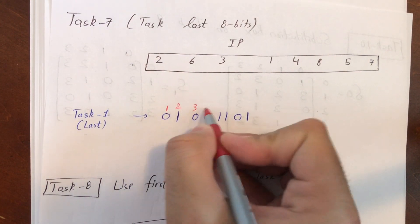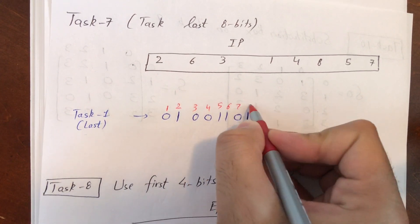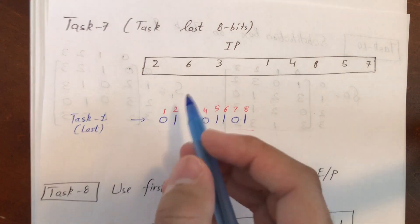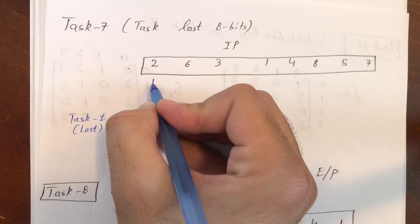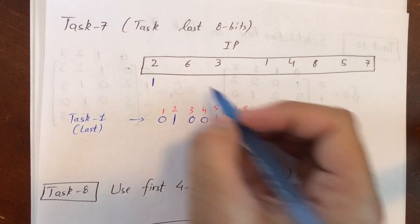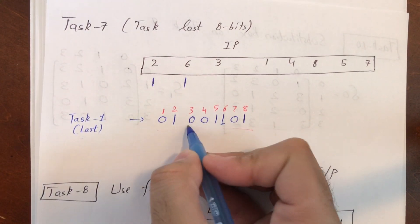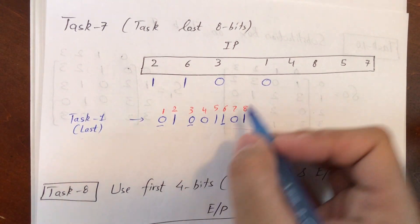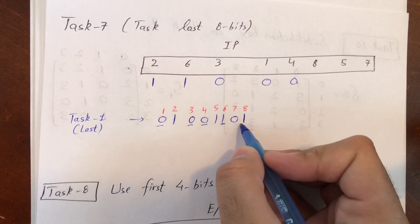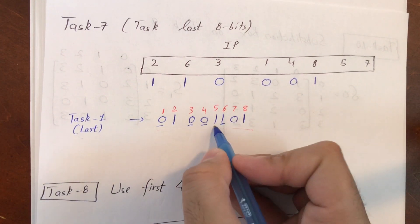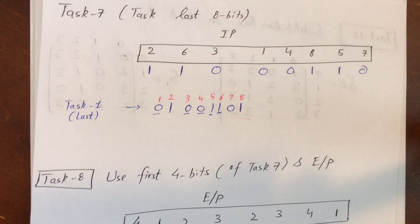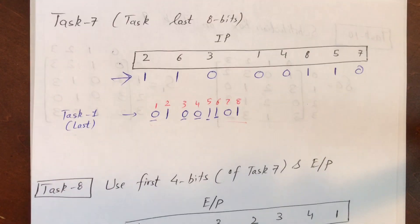Write the numbering 1 through 8 on top, then rearrange according to the IP pattern. Bit at position 2 comes first, then position 6, position 3, position 1, position 4, position 8, position 5, position 7. This is the result of the Initial Permutation.